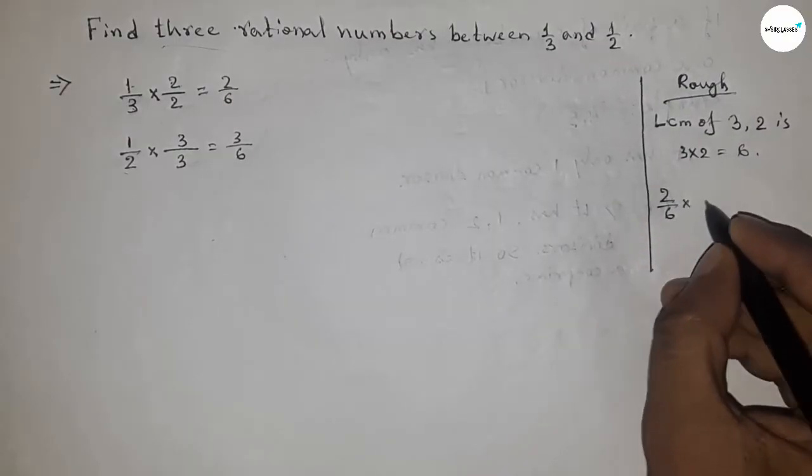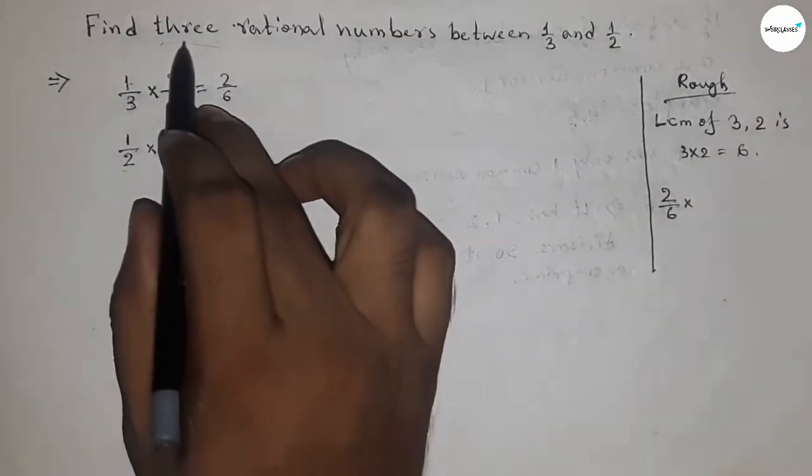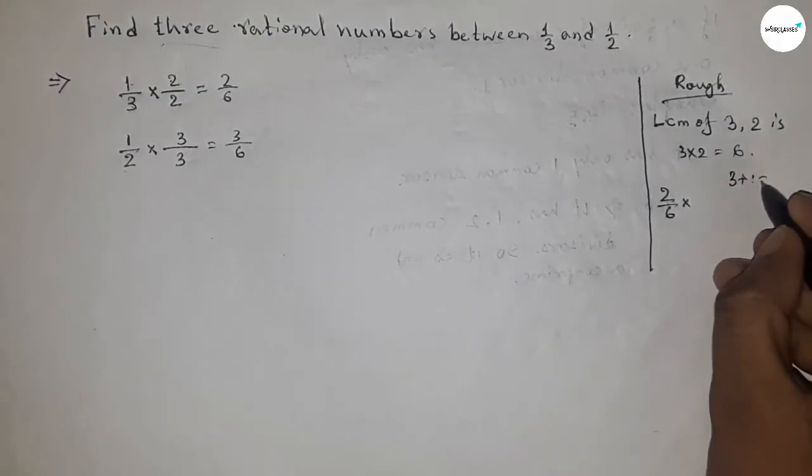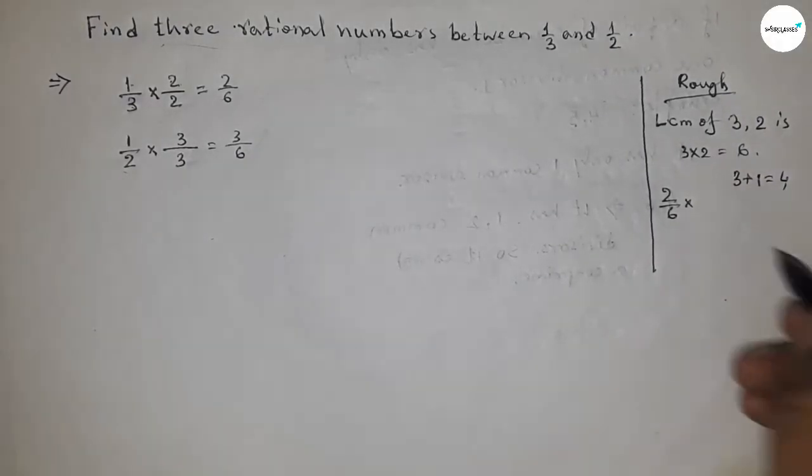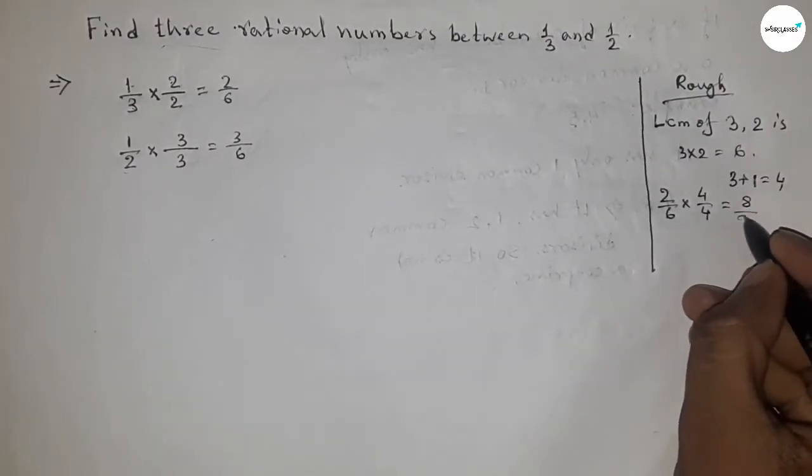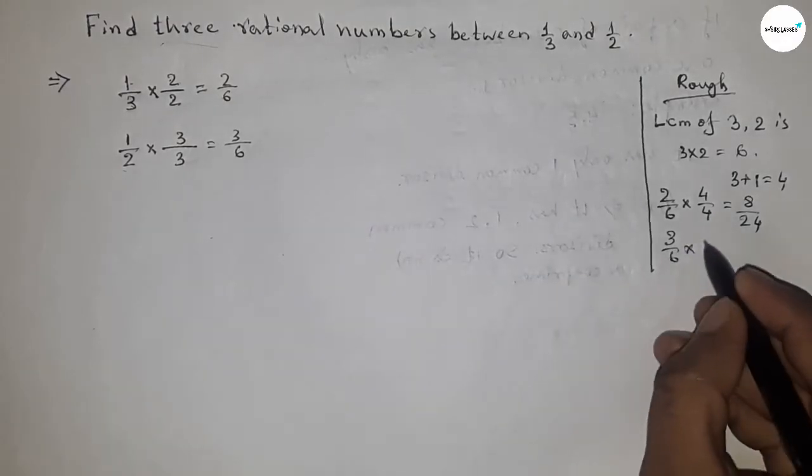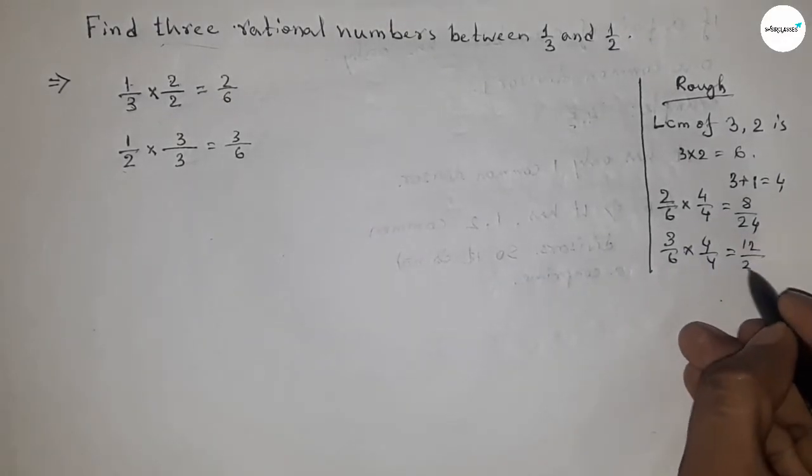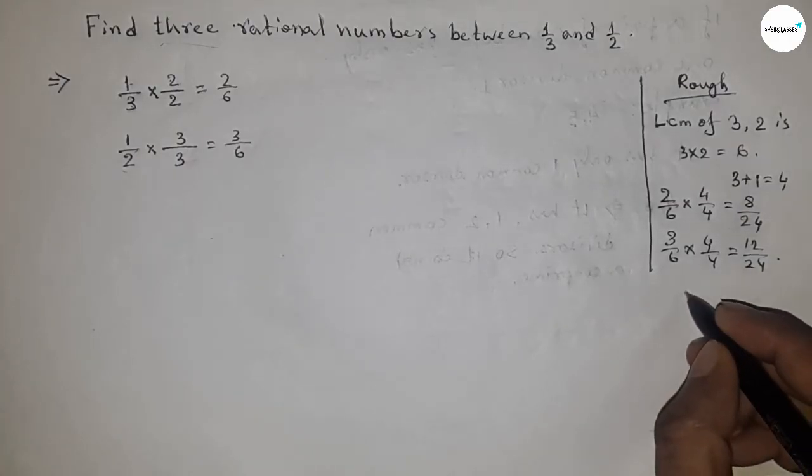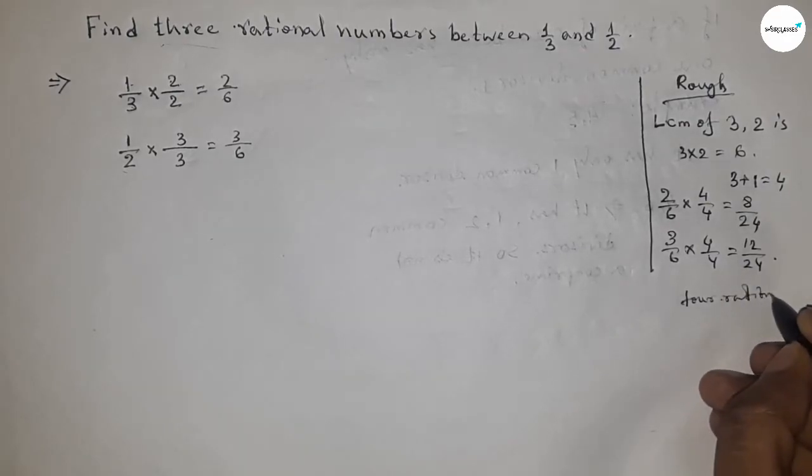For 3 rational numbers we have a rule: 3 plus 1, so 4. We have to multiply 4 by 4, so this is 8 by 24. Similarly, 3 by 6, 4 by 4 equal to 12 by 24.